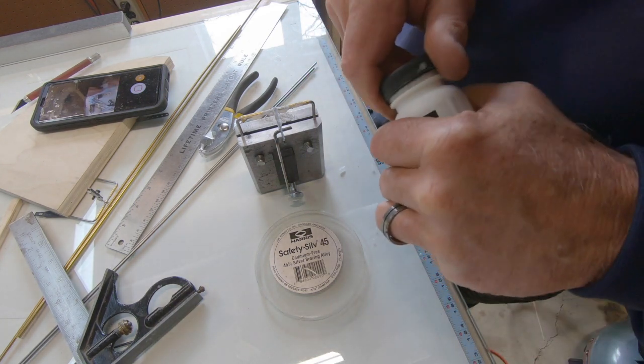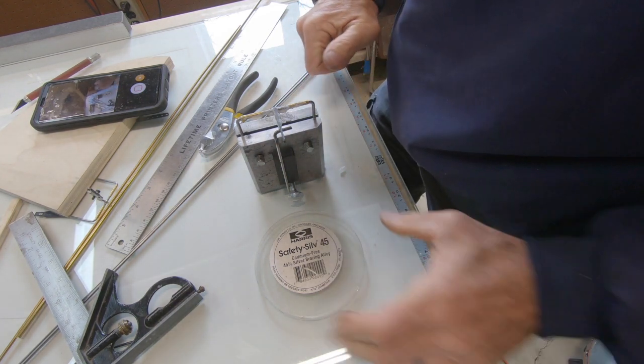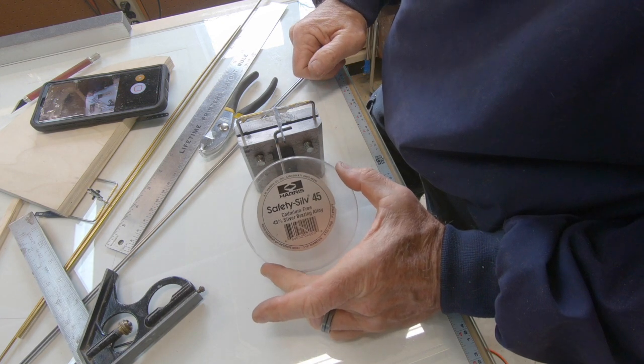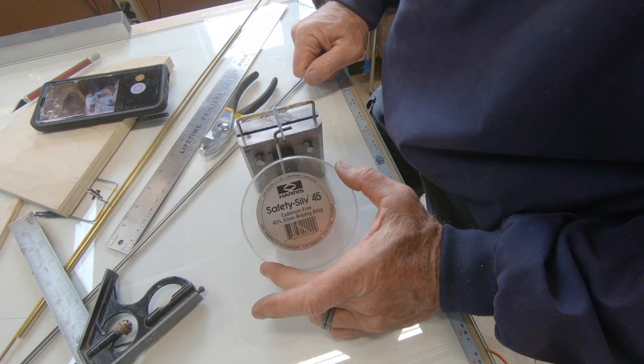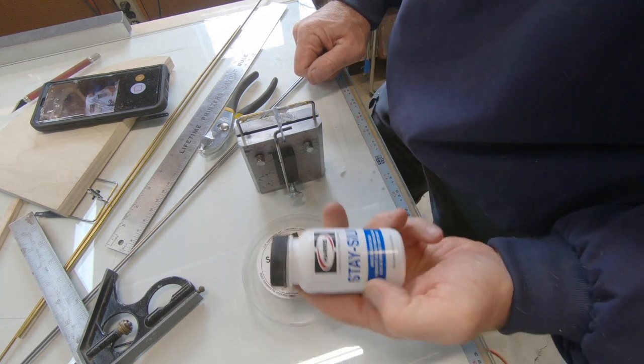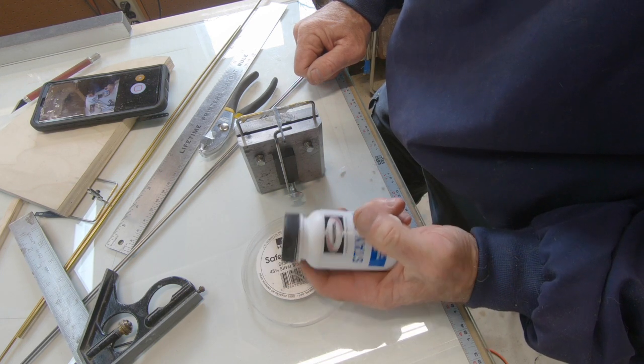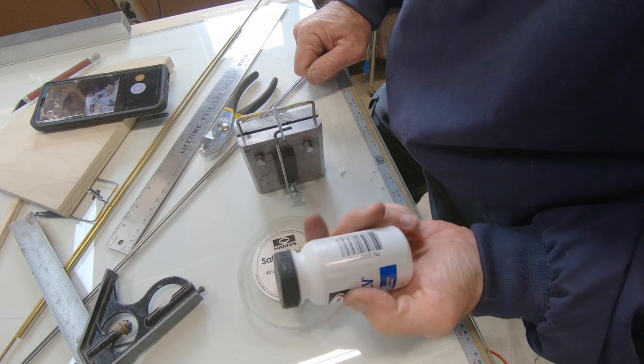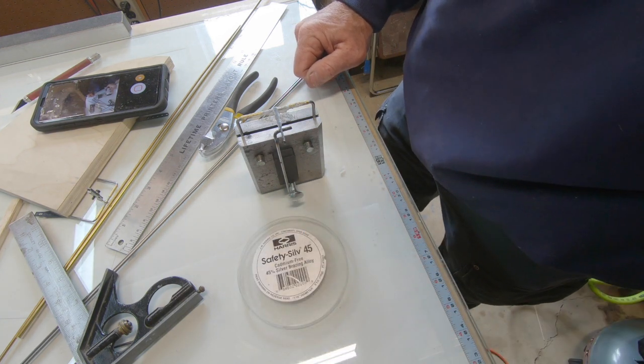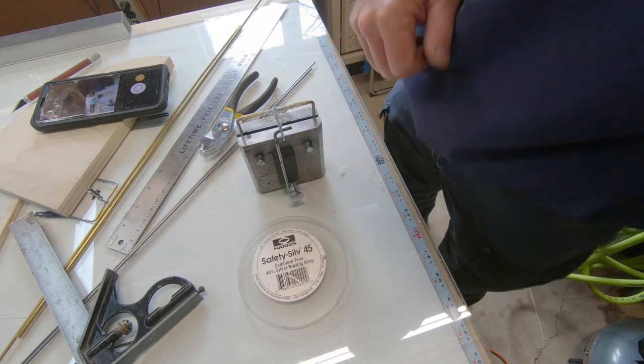Okay, this is 45% cadmium free Harris. And they sell the corresponding flux that goes with it. White braising flux, 6 ounces almost lasts you a lifetime.